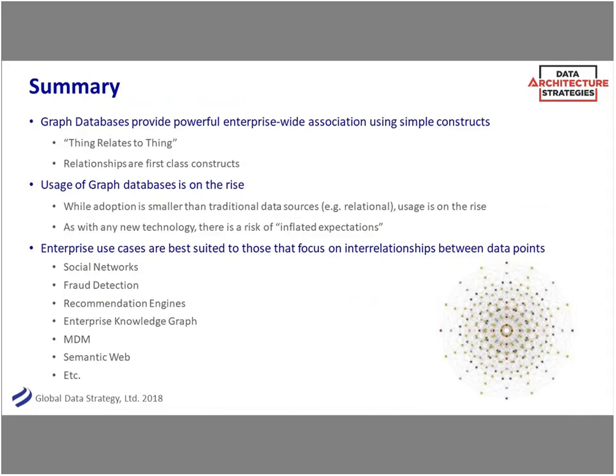In summary: a graph database is about 'thing relates to thing' - your relationships are first-class constructs, as important as the data itself. Graph database usage is on the rise; your feedback was similar to our survey and analyst surveys. People are just starting to look at this and adoption is on the rise. As with any technology, there is a risk of inflated expectations. Pick the use cases that are genuinely good fits rather than trying to use graph for everything.